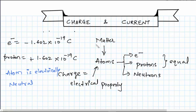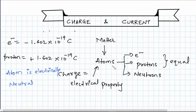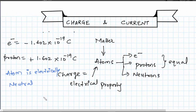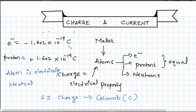To summarize: everything is matter, all matter is made up of atoms, atoms are divided into electrons, protons, and neutrons. Electrons and protons are equal in number. Charge is the electrical property of atoms. Electron has a charge of −1.602 × 10⁻¹⁹ C, proton has +1.602 × 10⁻¹⁹ C. Since they are equal in number, the atom is electrically neutral. The SI unit of charge is the coulomb, denoted by C.